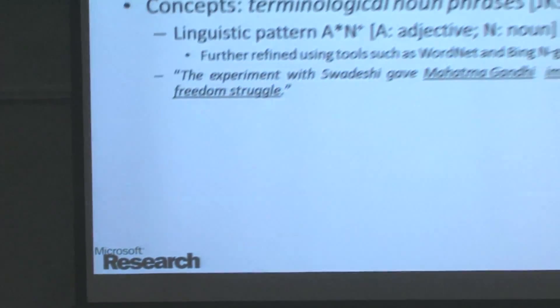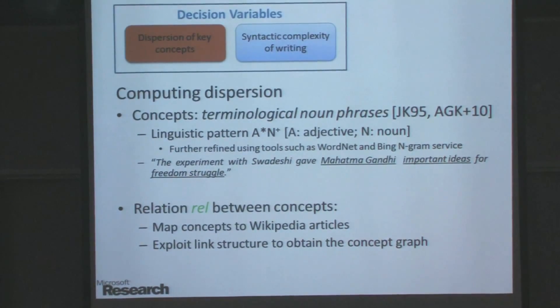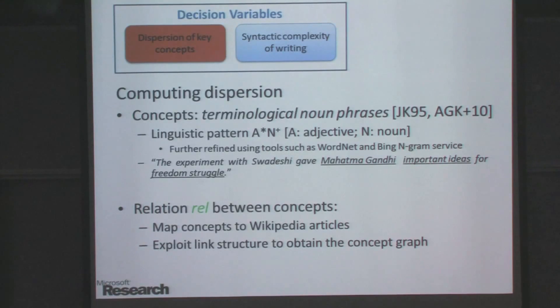Once we identify the concepts, we map them to Wikipedia articles and use the linkage structure in Wikipedia articles to get the relationship. The intuition is that the linkage structure in Wikipedia is very rich. If two concepts are related, there is a very high chance there will be a pointer from one concept to the other.